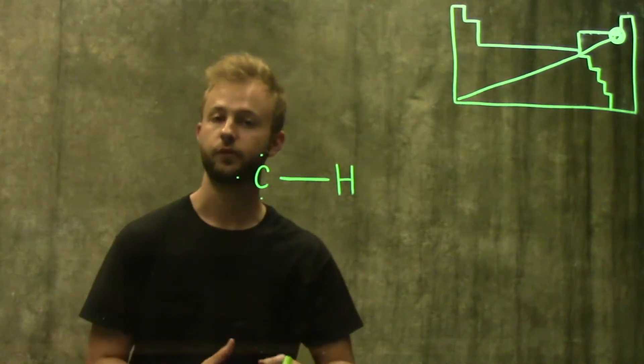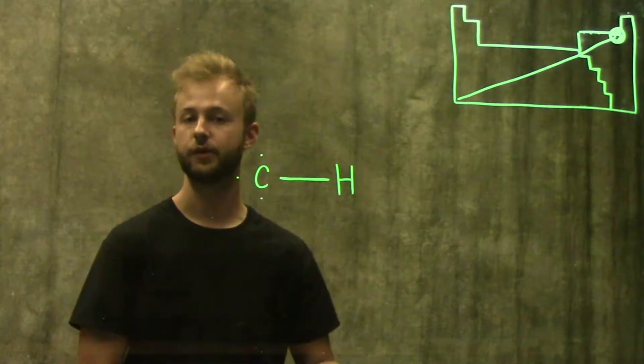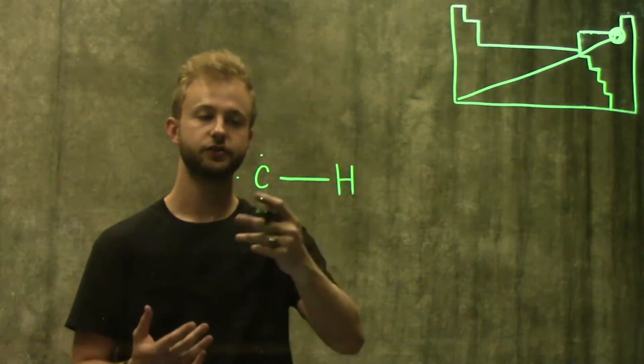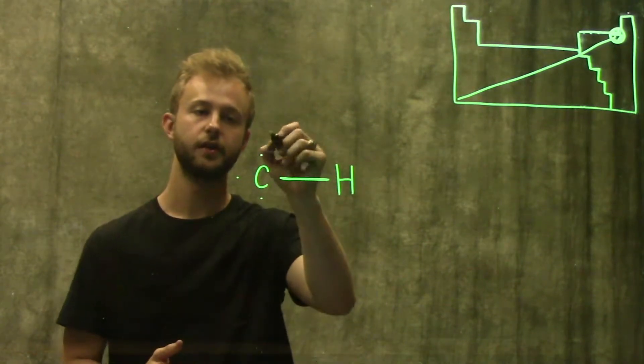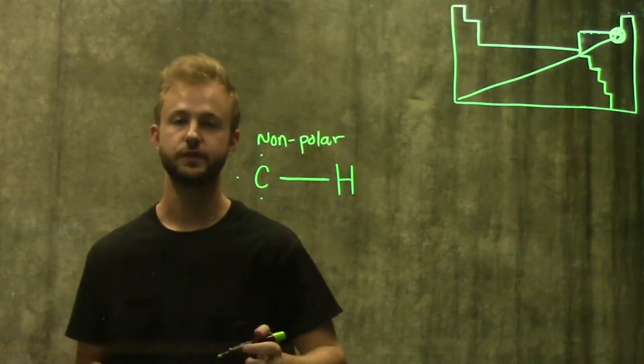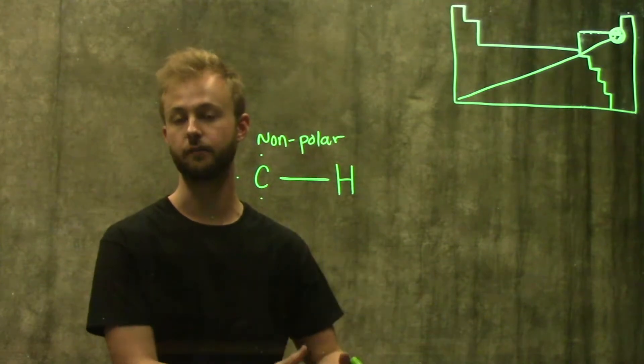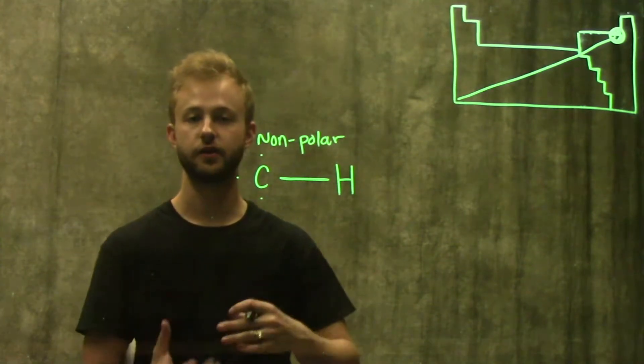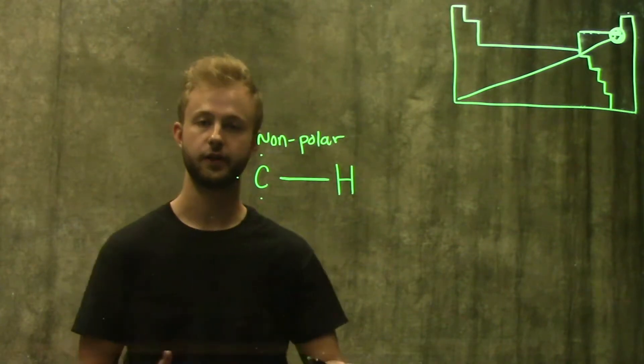Within a covalent bond, we actually have two distinct kinds: a non-polar covalent bond and a polar covalent bond. This carbon-hydrogen bond is actually an example of a non-polar covalent bond, because the electrons are being shared equally, which means that there's not one part of the molecule that has more electrons and therefore more negative charges than another part, and there's not a part that has less electrons and therefore more positive charges than another part.